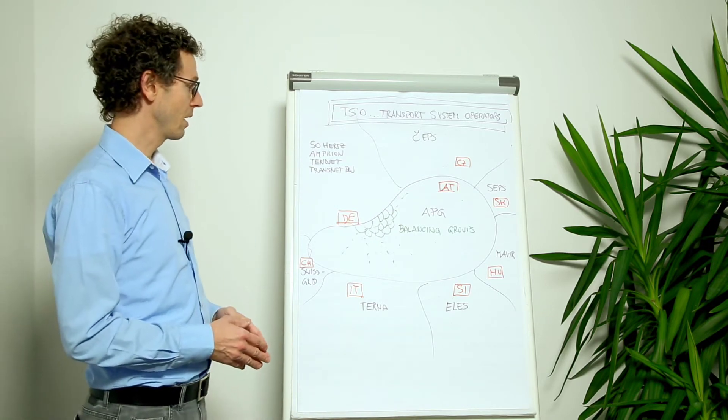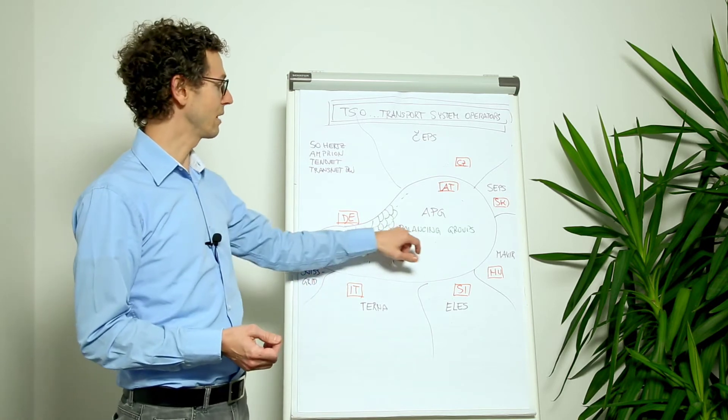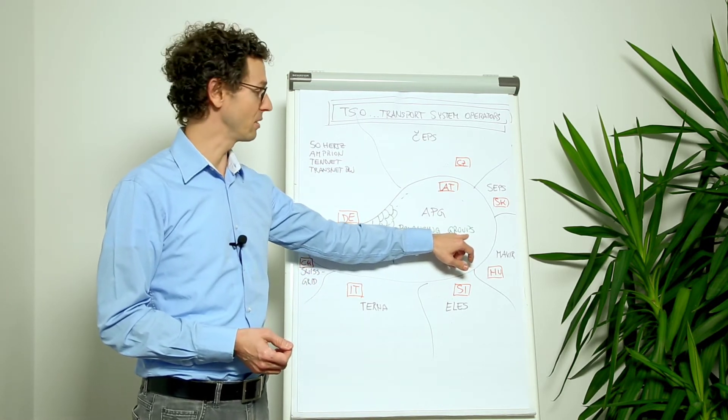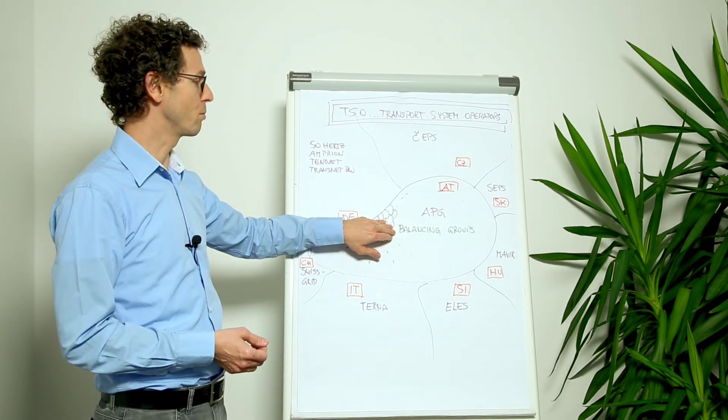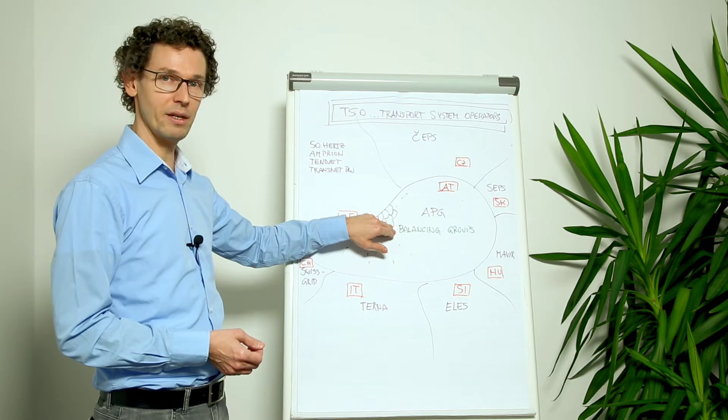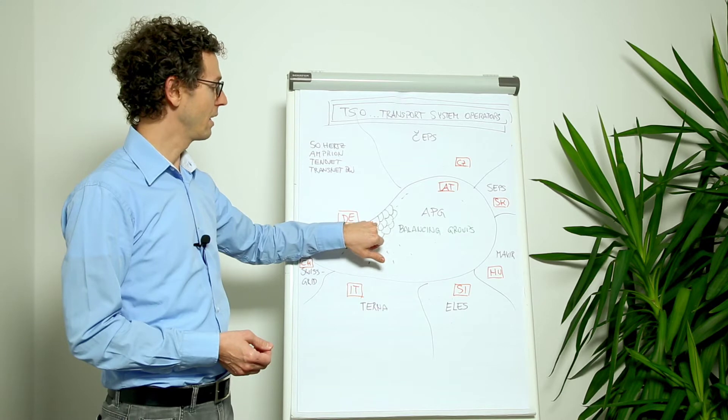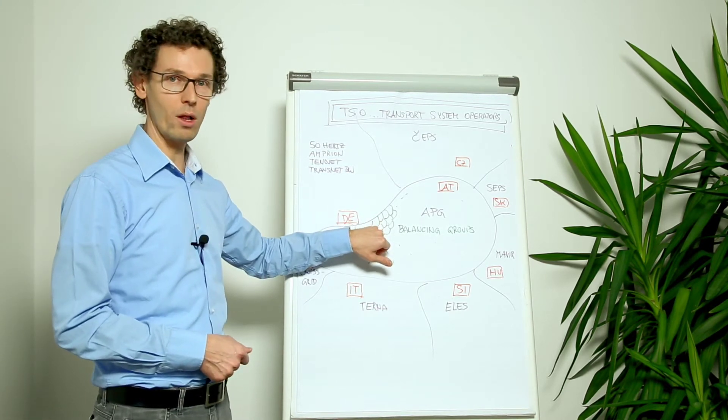The Austrian power grid issues balancing groups to its members, and the members, the balancing group responsible parties, they need to take care that for each of this balancing group the production and the consumption is the same at all times.